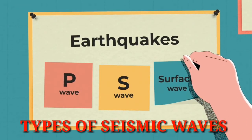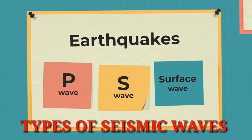There are three types of seismic waves: the P-wave, the S-wave, and the surface wave.